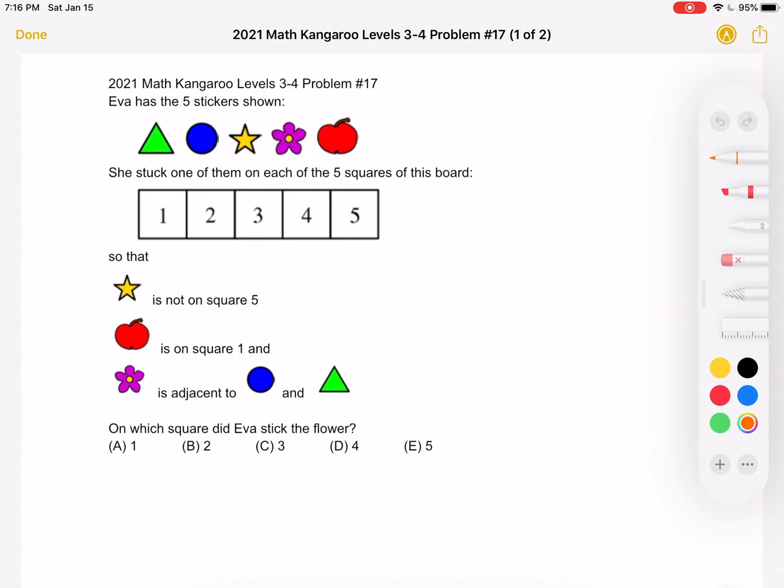Eva has the five stickers shown. She stuck one of them on each of the five squares of this board so that the star is not on square five, the apple is on square one, and the flower is adjacent to the circle and the triangle. On which square did she stick the flower?